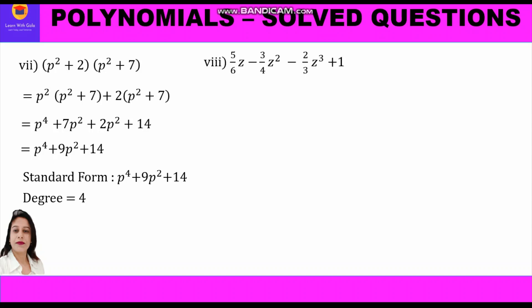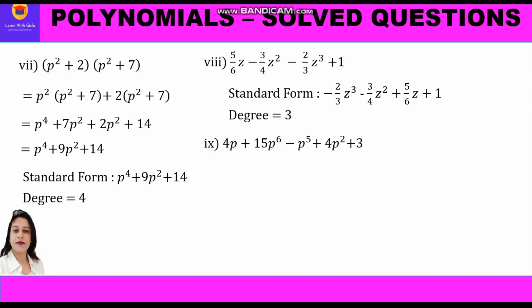Part 8: (5/6)z − (3/4)z² − (2/3)z³ + 1. The terms have powers 1, 2, 3, and 0 respectively. Rearranging from highest to lowest: −(2/3)z³ − (3/4)z² + (5/6)z + 1. The highest power is 3, so the degree is 3.